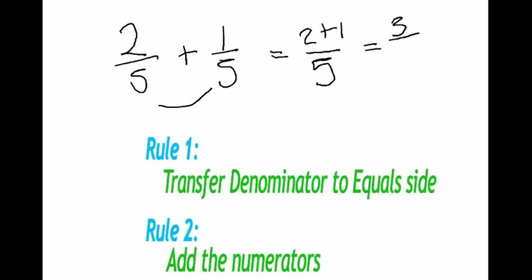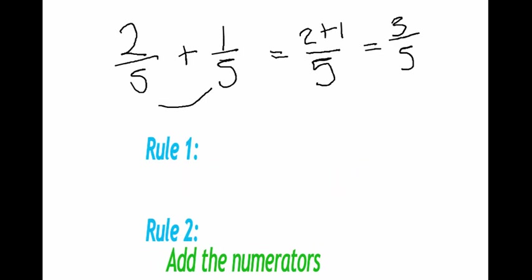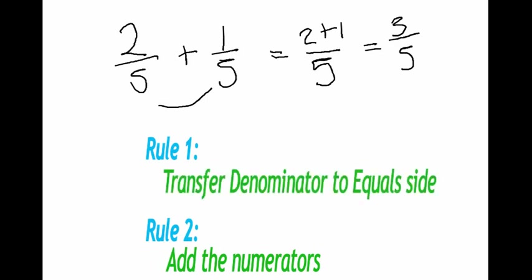Then your denominator is five. Two over five plus one over five equals three over five. And it is that simple to do. So just remember those two rules. When they have a common denominator, you don't do anything to the denominator. You just move it over. And the second rule is you add the numerators.